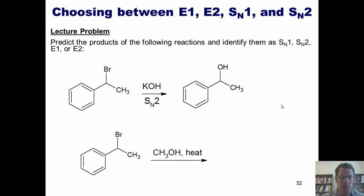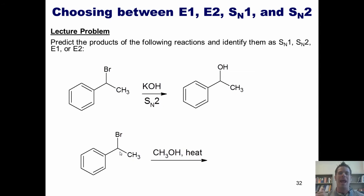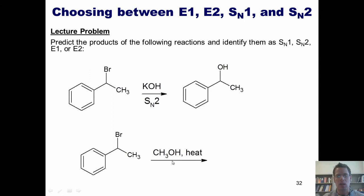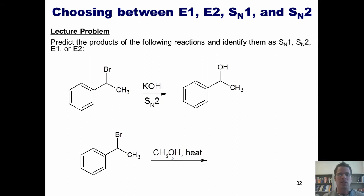Let's take a look at this example — it's the same molecule. We go through question number one: it's a secondary stabilized carbon, so it could proceed through any of the above reaction mechanisms. The next question is: is my nucleophile/base strong or weak? This nucleophile/base is methanol, which has no localized negative charges — only lone pair electrons and a partial charge due to polarity on the oxygen. Thus, it is a weak nucleophile/base, meaning this reaction will proceed either through an E1 or SN1 mechanism.